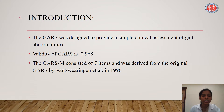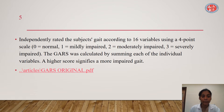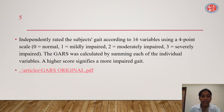The GARS was designed to provide a simple clinical assessment of gait abnormalities. The validity of GARS is 0.968. The GARS-M consisted of 7 items and was derived from the original GARS by Vansorgen et al. in 1996. It independently rated the subject's gait according to 16 variables using a 4-point scale: 0 is normal, 1 is mildly impaired, 2 is moderately impaired, 3 is severely impaired. The GARS score was calculated by summing each of the individual variables, and a higher score signifies a more impaired gait.